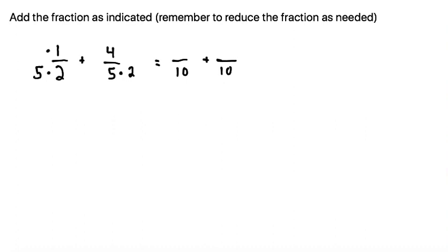But in order to keep this balanced, we need to also multiply the numerators by whatever we multiply the denominators by. So 5 times 1 is 5, and 4 times 2 is 8.